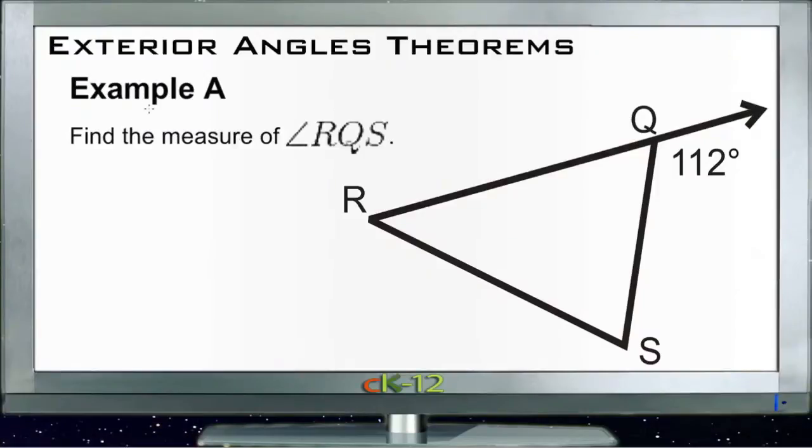All right, let's take a look at these examples. Example A asks us to find the measure of angle RQS, which would be this angle right up here. The easiest way to find that would probably be with the exterior angle theorem. We know because of that, that this full angle right here, which is a straight line, is 180 degrees.